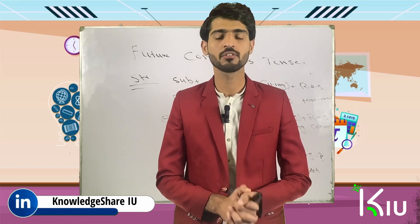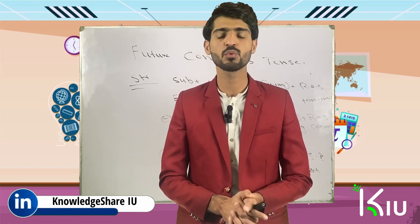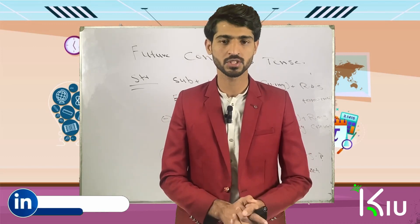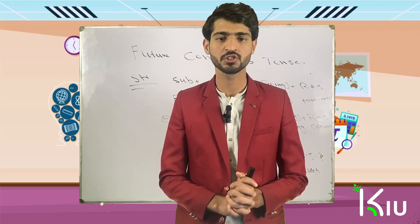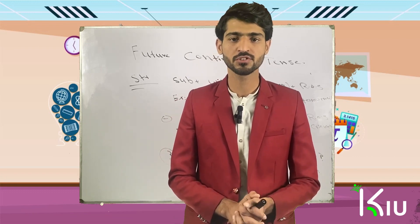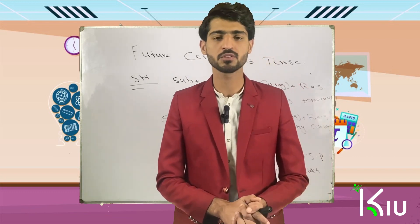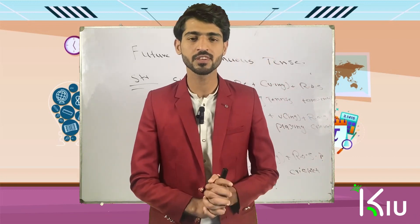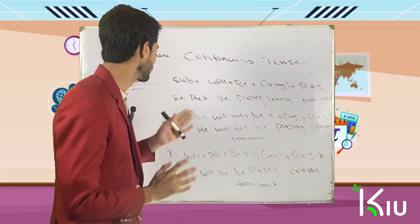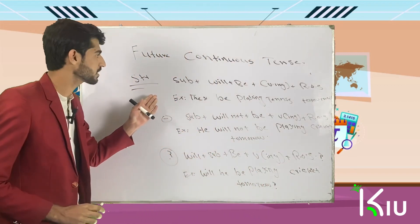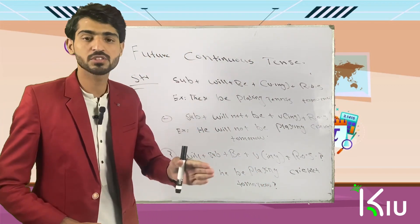Now we will talk about the structure of future continuous tense — how we will make positive sentences, negative, and interrogative. So for that we have three structures: positive, negative, and interrogative. Let's get ahead with the first structure.